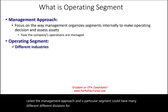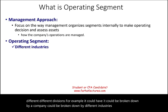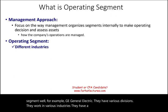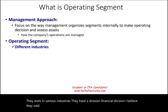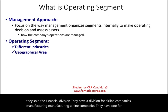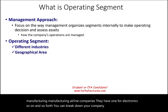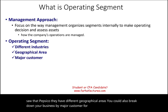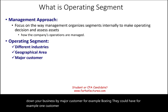A particular segment could have many different divisions. For example, a company could be broken down by different industries as operating segments. Take GE — General Electric — they work in various industries: they had a financial division, a division for manufacturing airline companies, one for electronics, and so on. You can also break down your company by geographical area, as we saw with PepsiCo. You could also break down your business by major customer — for example, Boeing could have one customer large enough to warrant its own division.